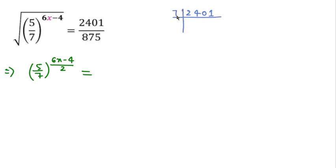343 is divisible by 7, giving 49. And 49 is divisible by 7, giving 7. This means we can write 2401 = 7^4. We can also write 875 in prime factors.